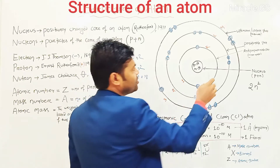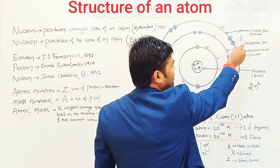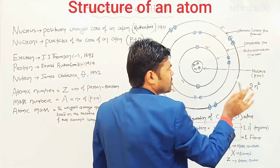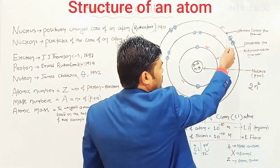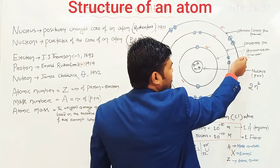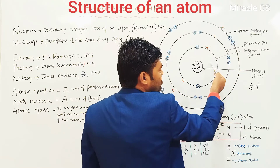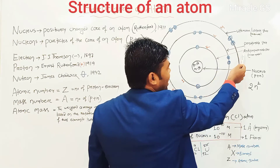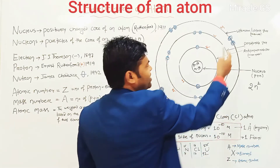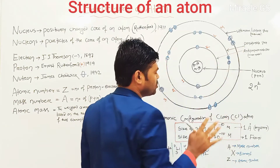Another important question is: the outer cell is called as ultimate cell, valency cell or outer cell. The next to the outer cell is called as penultimate cell. And the cell nearer to the nucleus is called as anti-penultimate cell or innermost cell. This one is outermost cell, this one is innermost cell.